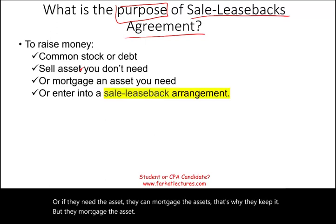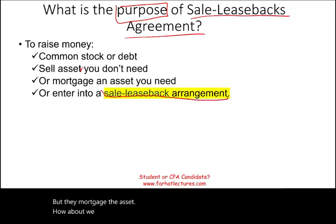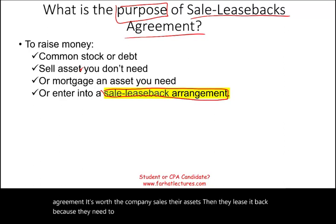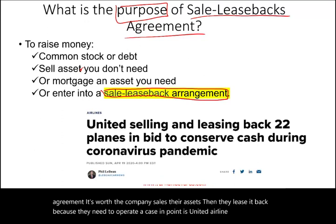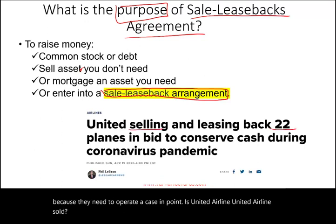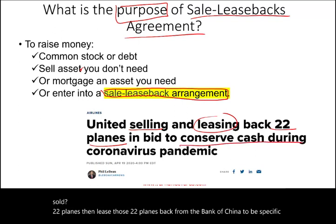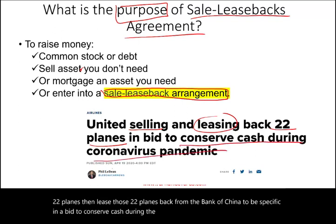How about a sales leaseback agreement? It's where the company sells their assets, then leases them back because they need to operate. A case in point is United Airlines — United Airlines sold 22 planes, then leased those 22 planes back from the Bank of China in a bid to conserve cash during the coronavirus pandemic, in April 2020.